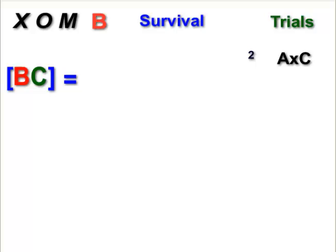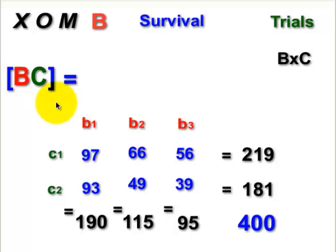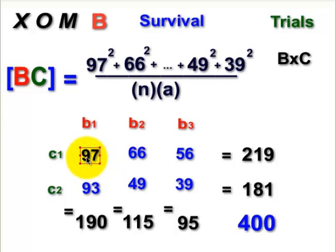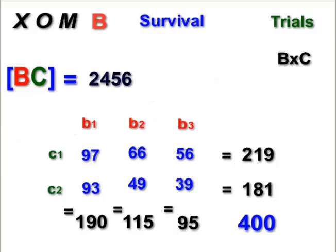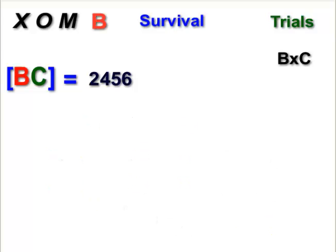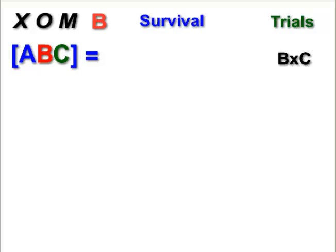Pressing along, let's go and do B, C. It's the last two-way we're missing. So with the B, C, we're going back to this original table we made. Not original, but we just made it, right? The B columns against the C rows. So to find the B, C, we're gonna take the 97 squared, 66, 56, 93, 49, 39. Square all those, add them all up. Divide by what's not in the bracket term. So N times A. And N was 4 and A was 3. So we're just, I'm just doing the math now. So now I have the bracket term for B, C.